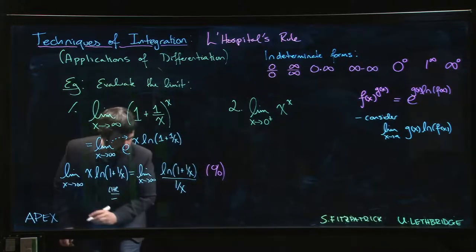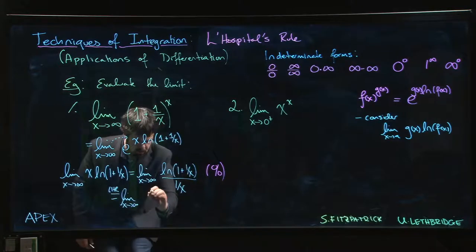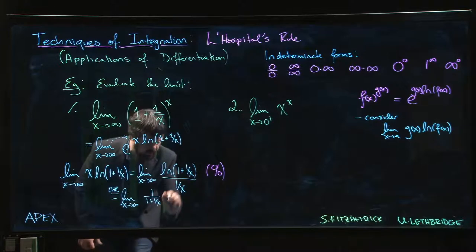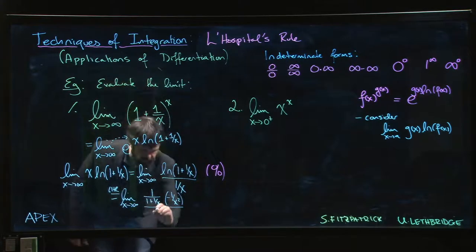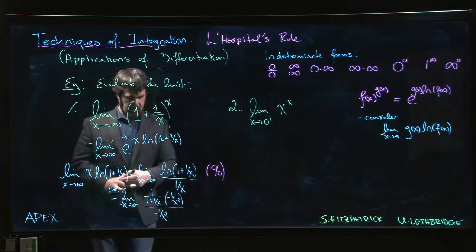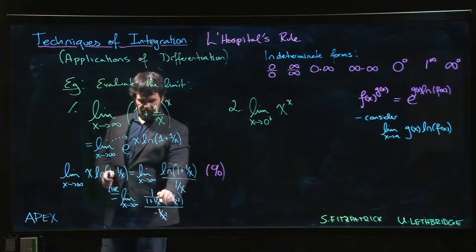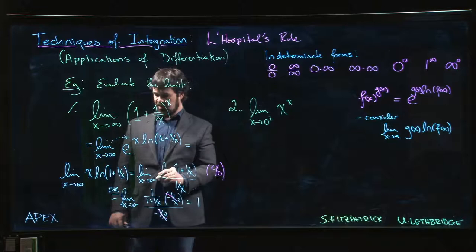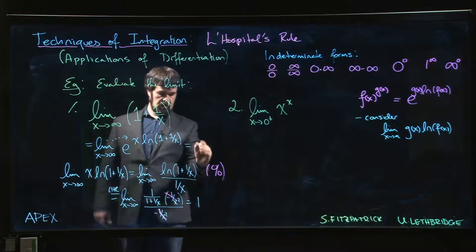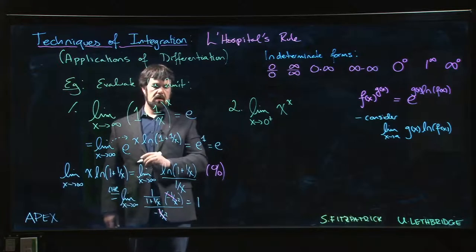By L'Hôpital's rule, we differentiate the top and bottom. The derivative of the top, log(1 + 1/x), gives 1/(1 + 1/x) times the derivative of (1 + 1/x), which is −1/x². The derivative of the bottom, 1/x, is −1/x². We get a nice cancellation, leaving 1/(1 + 1/x). As x goes to infinity, 1/x goes to zero, so this limit equals 1. Therefore the original limit is e to the 1, which is e.